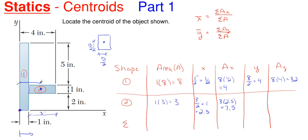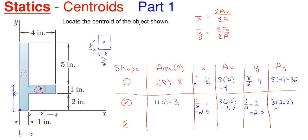We repeat that process for Y, keeping in mind shape two does not touch the origin point. We take the height divided by two — one divided by two — and then add the two inches to get down to the origin point, which gives 2.5. It's just a happy coincidence that X and Y are equal for this shape. A times Y is three times 2.5, which gives 7.5.